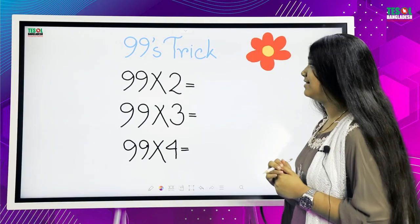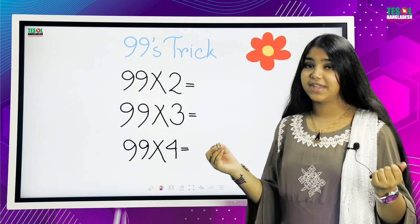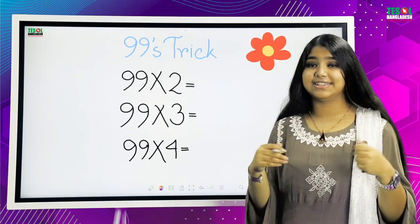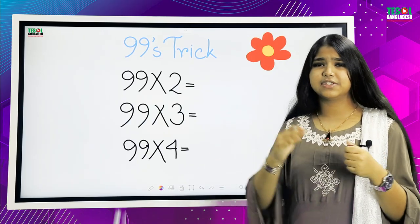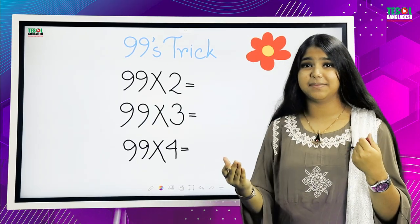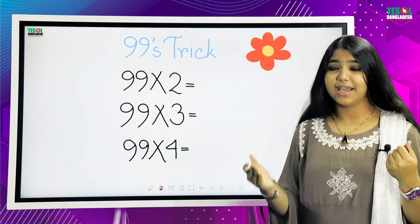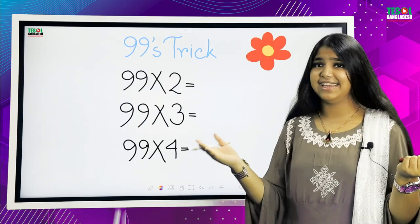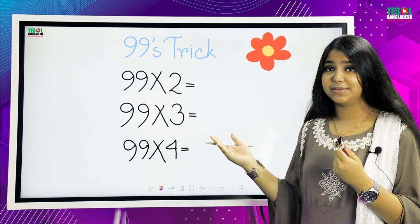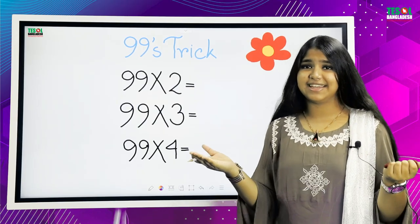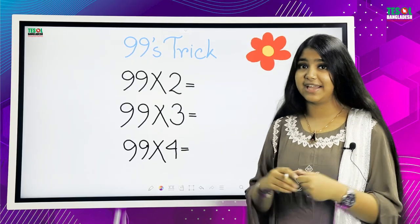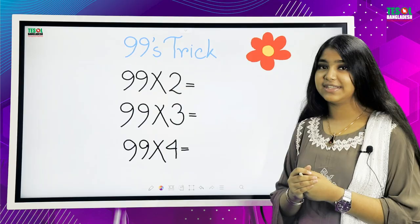Number one trick is 99's trick. I mean 99's multiplication trick. So, whenever you multiply 99 with any number, you just think that it takes a lot of time. It is so time-consuming. But actually, if you know this trick, then easily you can do 99's multiplication. We know that 99 times 1 is 99, so I do not want to do 99 times 1. Let's start with 99 times 2.